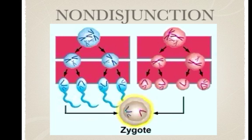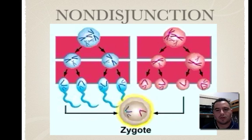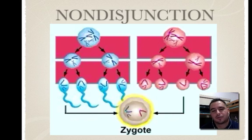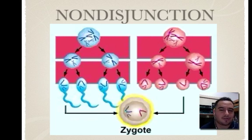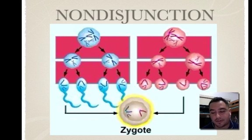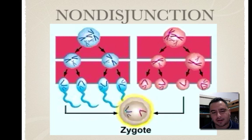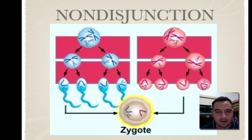Most offspring that receive an abnormal number of chromosomes die before birth. Non-disjunction is what caused those syndromes we talked about in class, like Edwards syndrome, Down syndrome, Klinefelter's, and Turner syndrome. Hopefully that helped — make some comments online and I'll see how I can further help you. Take care and good luck with your cell division project.